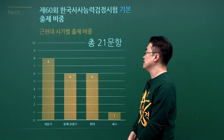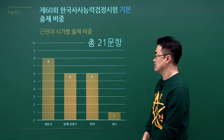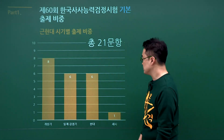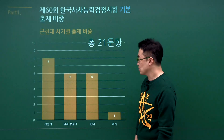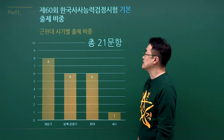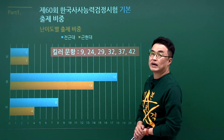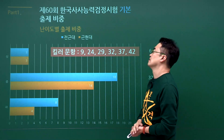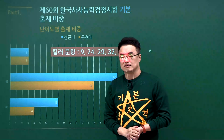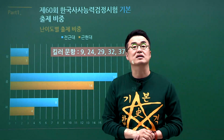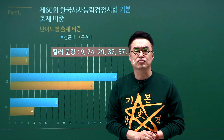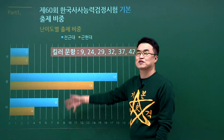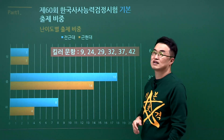근현대는 총 21문항이 출제되었습니다. 개항기 8문항, 일제강점기 6문항, 현대 6문항, 세시풍속 1문항으로 출제되었습니다. 어려웠어요. 킬러문제가 꽤 많아서 9번, 24번, 29번, 32번, 37번, 42번이 어려웠습니다. 이러다 보니 기본을 응시했던 수험생들 중 4급 합격률이 14%대밖에 안 나왔습니다. 어떻게 어려웠는지 저랑 함께 문제 풀면서 확인해 보도록 하겠습니다.